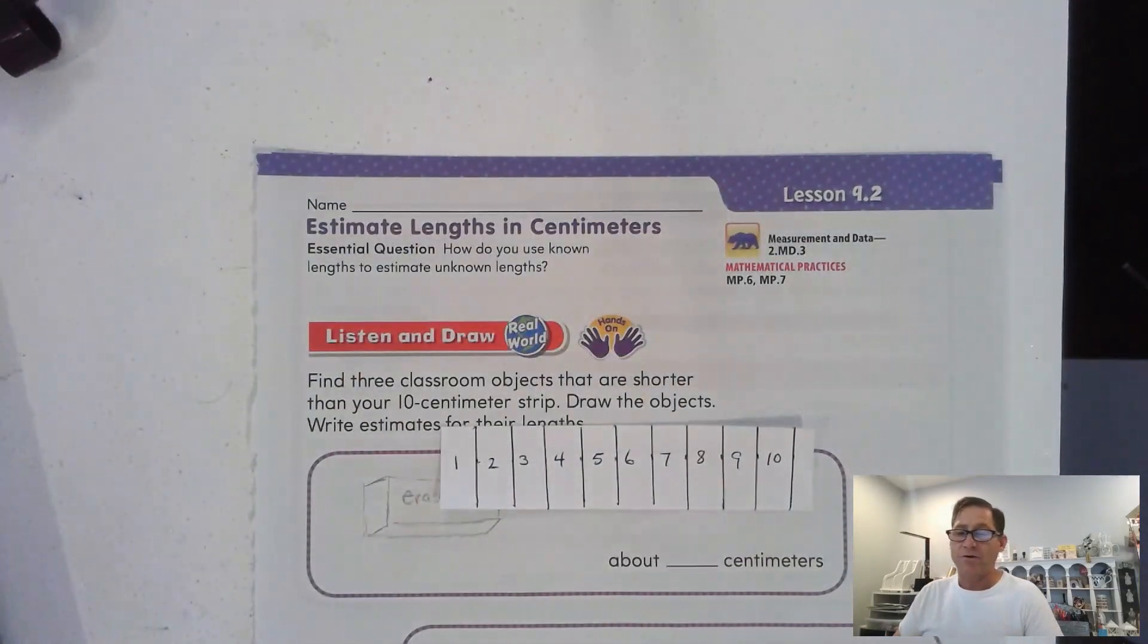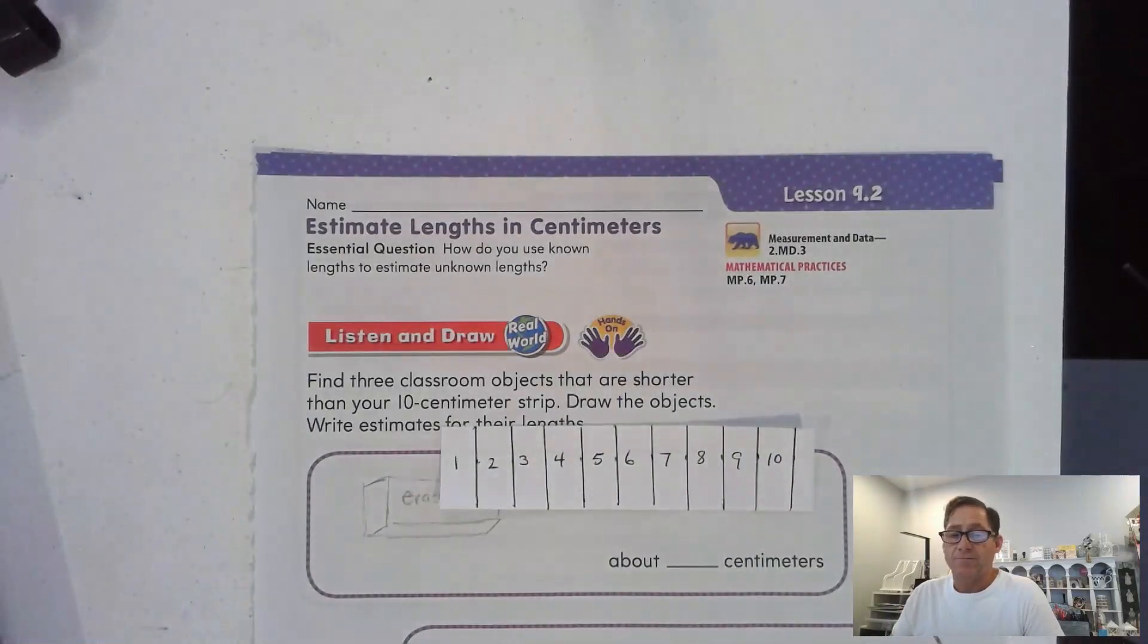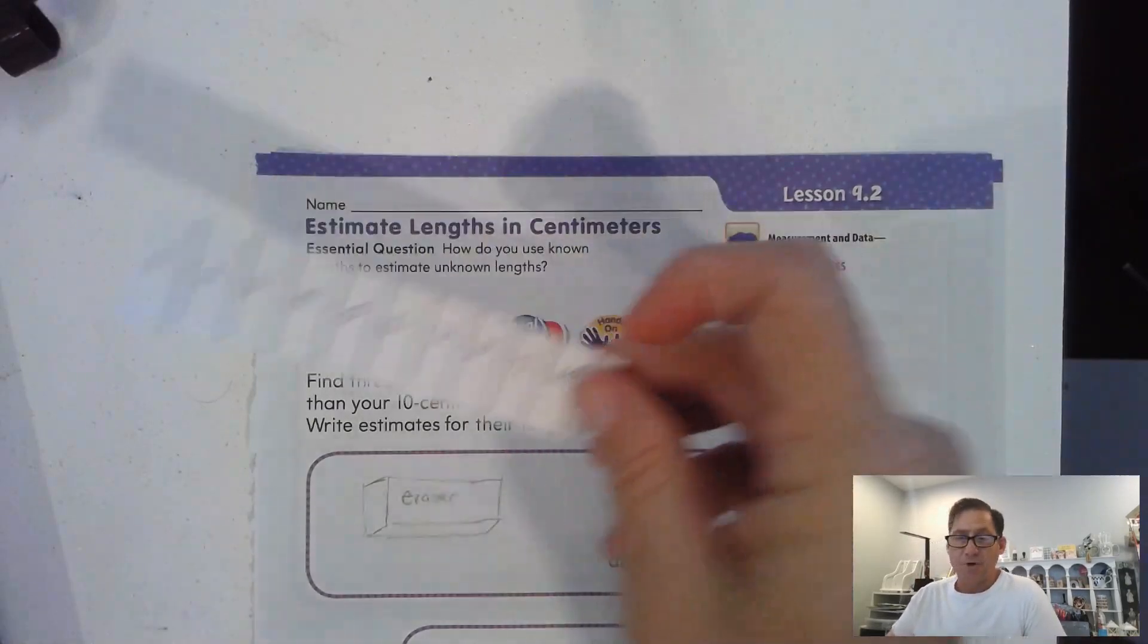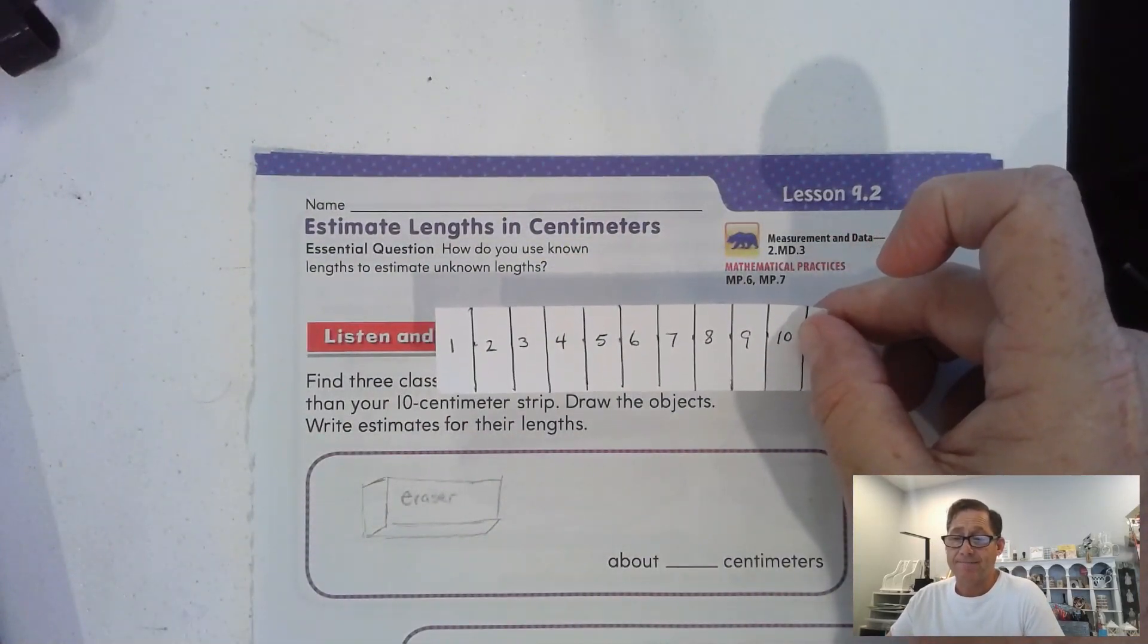Okay, so go ahead and do that, and when you've paused the video, create your strip, and then restart the video. After you've restarted the video, I want you to find three objects in your class that are smaller or shorter than your 10 centimeter strip.